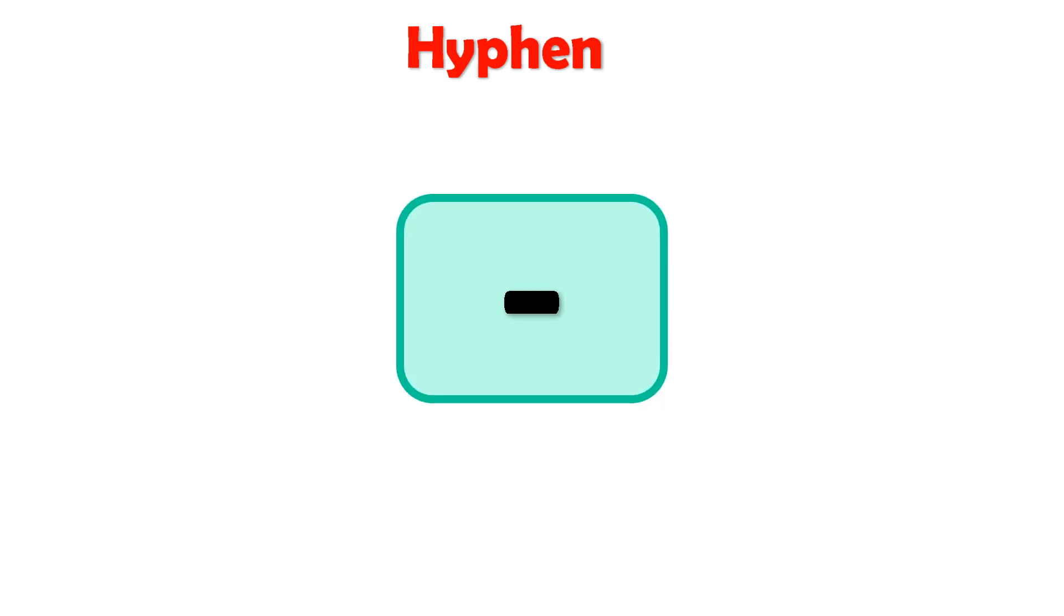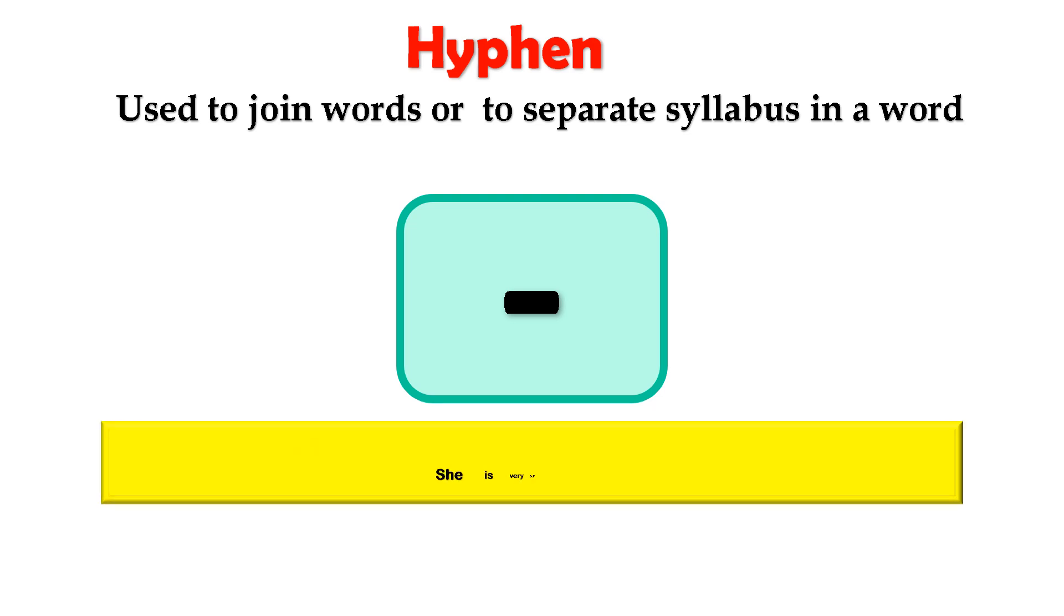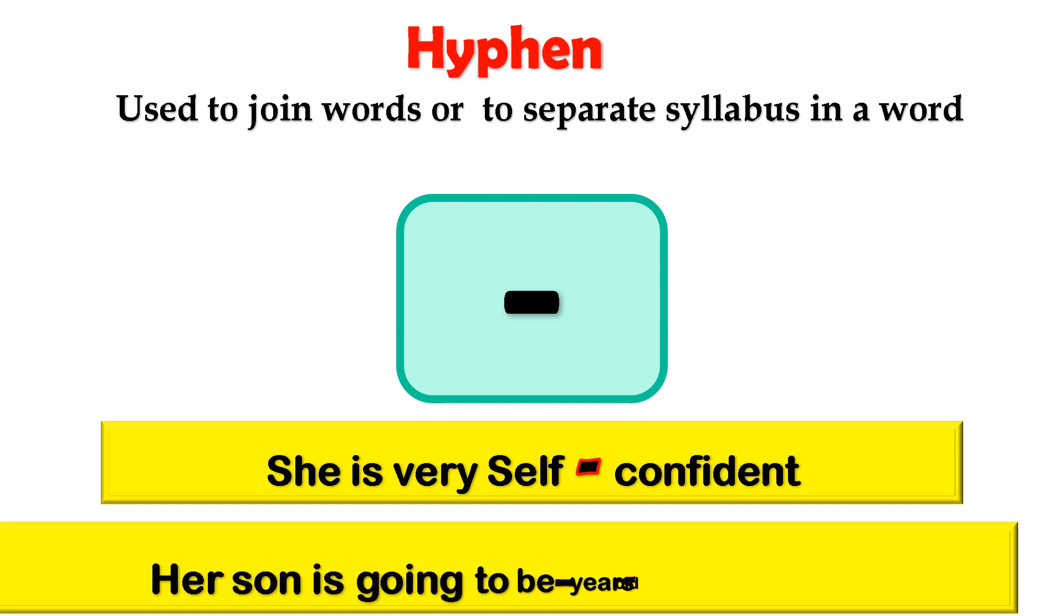Hyphen. A hyphen is used to join words or to separate syllables in a word. For example, she is very self-confident. Her son is going to be four years old.